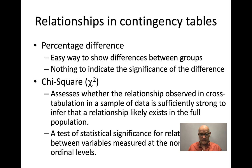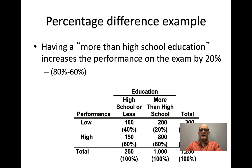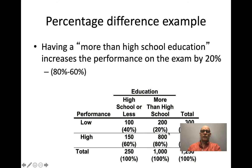Here's a percentage difference example: having more than a high school education increases test performance on the exam by 20%. When we express substantive differences, we say 'having this characteristic has a this-percentage difference compared to that characteristic.' There's a 20% difference here — more than high school education increases performance by 20% compared to high school or less.